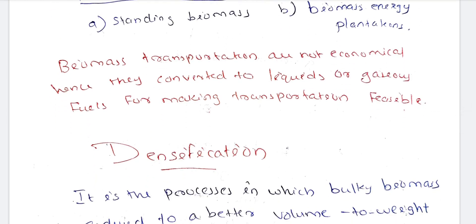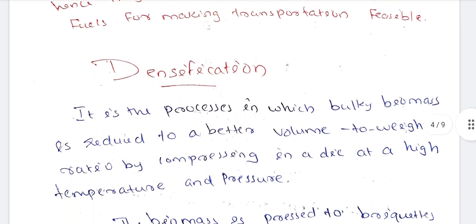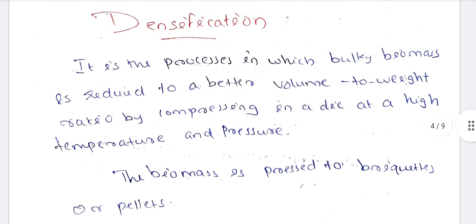Biomass transportation is not economical. Hence, they are converted into liquids or gaseous fuels to make transportation feasible. It is a process in which bulky biomass is reduced to a better volume-to-weight ratio by compressing in a die at high temperature and pressure.